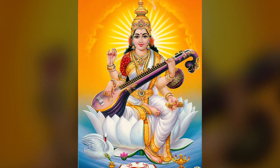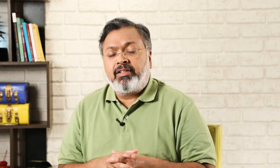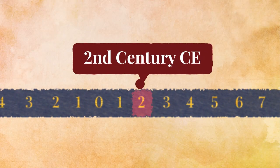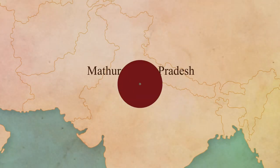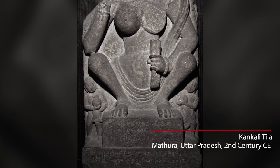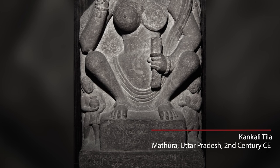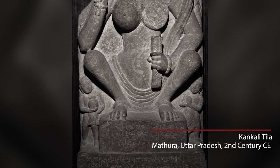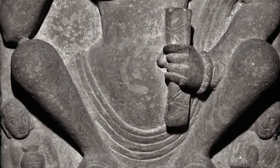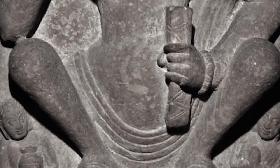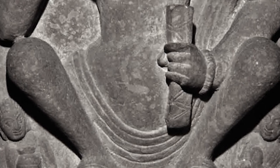When was the earliest image of Saraswati created? Saraswati is worshipped since Vedic times, but we have no artefacts from the Vedic period, and no artefacts from the Mauryan period either. The earliest image of Saraswati actually comes from a Jain shrine in Mathura, roughly around the 2nd century. It is not a complete image, but we find the image of a goddess with a book in her hand — and this is the earliest image of Saraswati that we have.